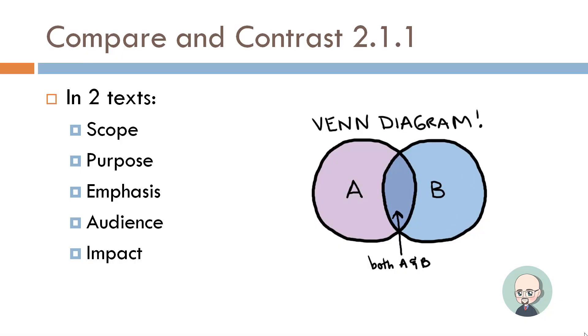So when we compare and contrast two texts, you may have seen this before, I have a Venn diagram on the right. We see where they overlap, right there in the middle where A and B overlap each other. That means where they're the same and where they're different. So we're comparing and contrasting, seeing where they're the same and seeing where they're different. This is a large part of the exam.